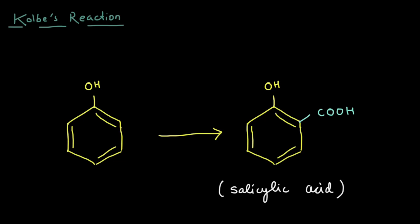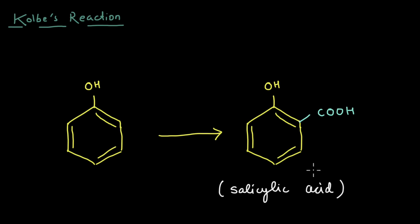The most important thing to know about the Kolbe-Schmitt reaction is that we're starting with a phenol and our end product is going to be salicylic acid, which is basically a COOH group getting added to the ortho position. This reaction is important because salicylic acid is used to make aspirin, which is prescribed for minor pains or fevers.